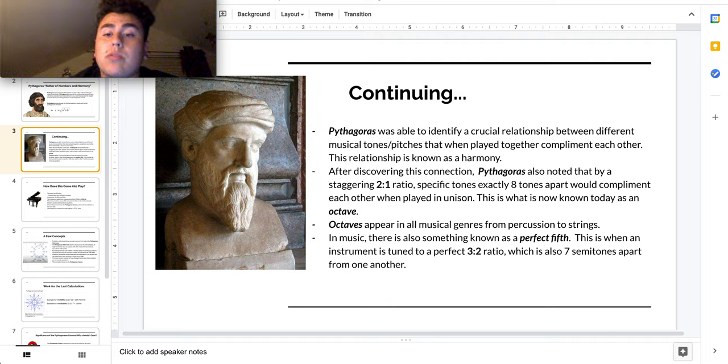So continuing on, Pythagoras was able to identify a crucial relationship between different musical tones and pitches that, when played together, complement each other. This relationship is known as a harmony. After discovering this connection, Pythagoras also noted that by a staggering two-to-one ratio, specific tones exactly eight tones apart would complement each other when played in unison. This is what is known today as an octave.